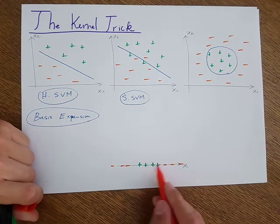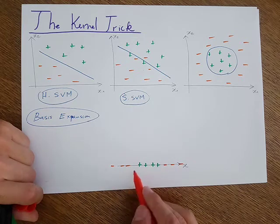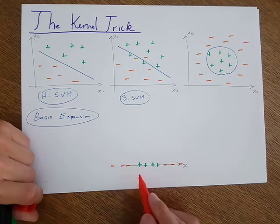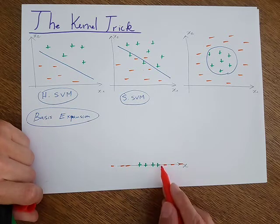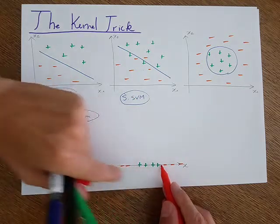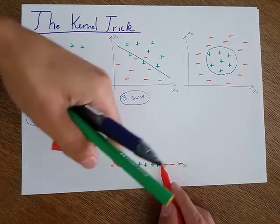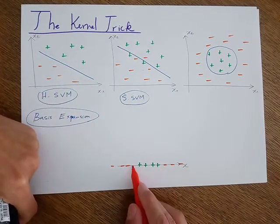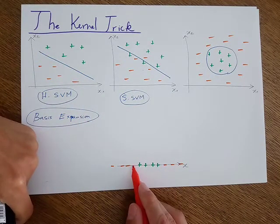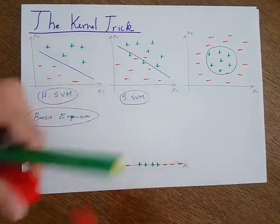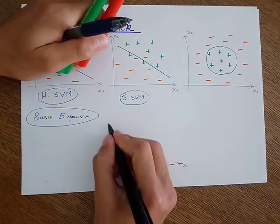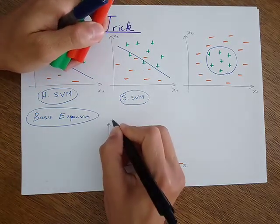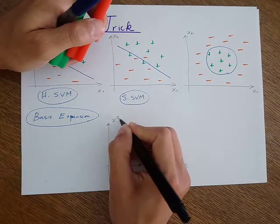You can see that there is no threshold that would give me a good model to classify these samples. If I take a threshold here, I will have a lot of mistakes because I have on this side both positive samples and negative samples. And if I take a threshold here, it would not be a good threshold either. But what if I create a new feature — say this feature is x squared?